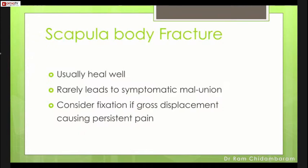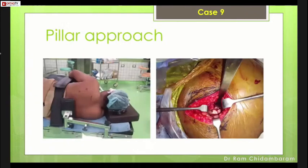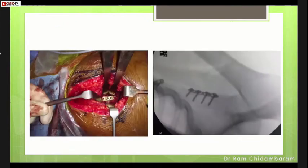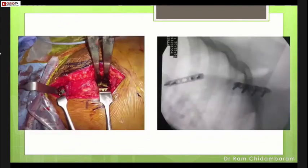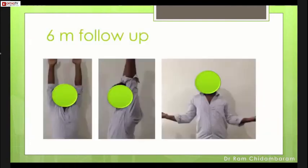Scapular body fractures rarely lead to symptomatic malunion, and surgery is considered only if displacement is significant. A 25-year-old man presented after a road traffic accident with crepitus at the back of the shoulder and pain on movement above 90 degrees, with significant frontal plane displacement. I used the pillar approach — a direct approach to the lateral border of the scapula — plating both the proximal and distal fractures through the same incision. His range of movement at six months follow-up was excellent.